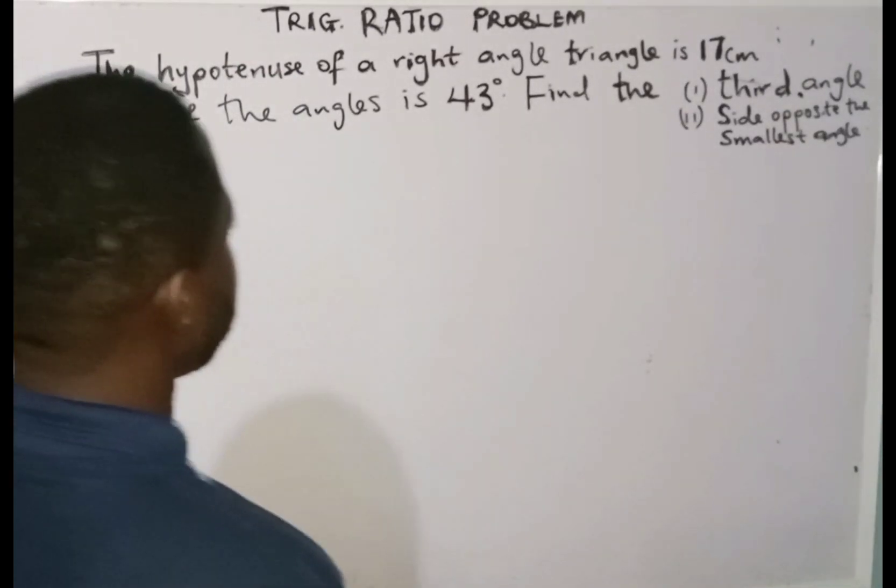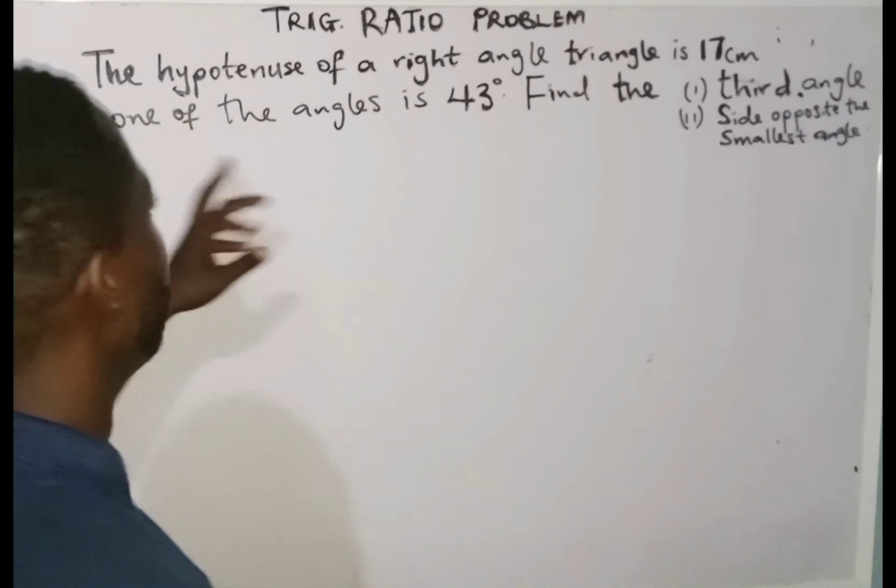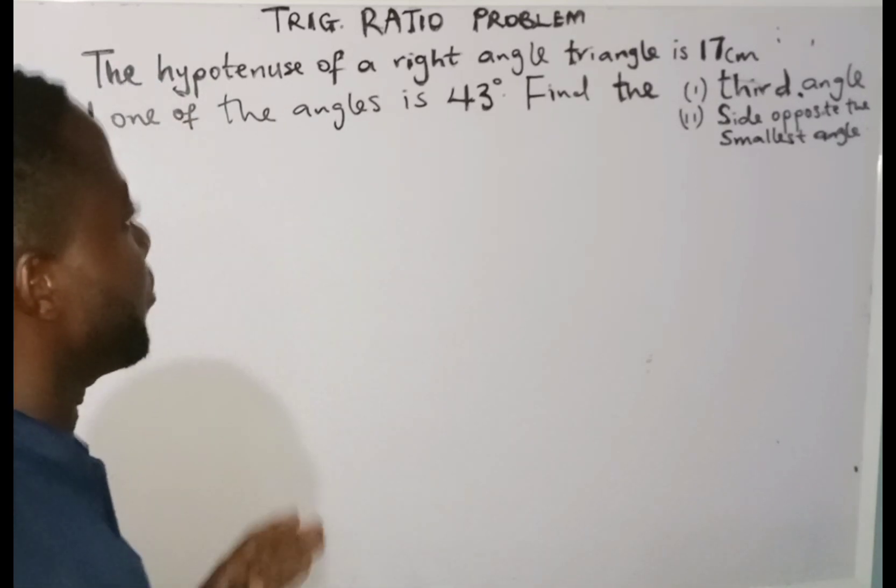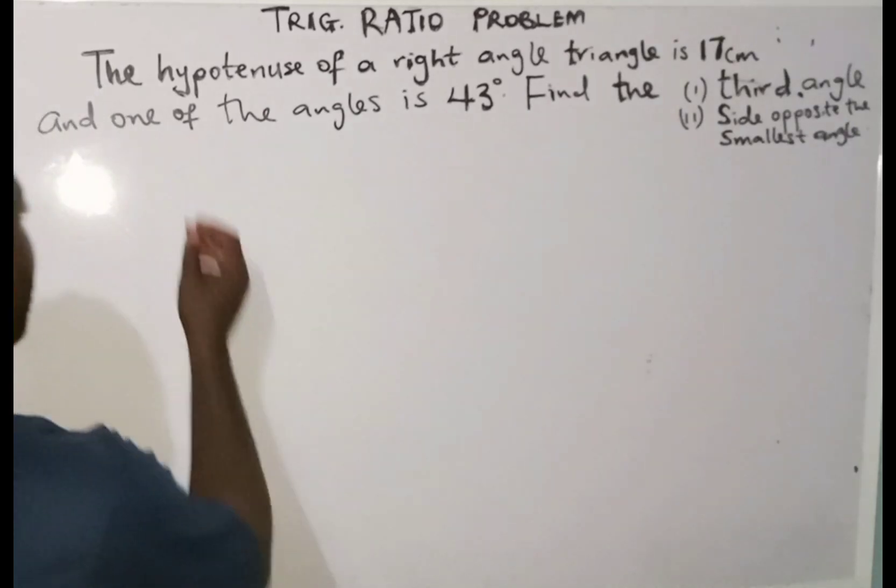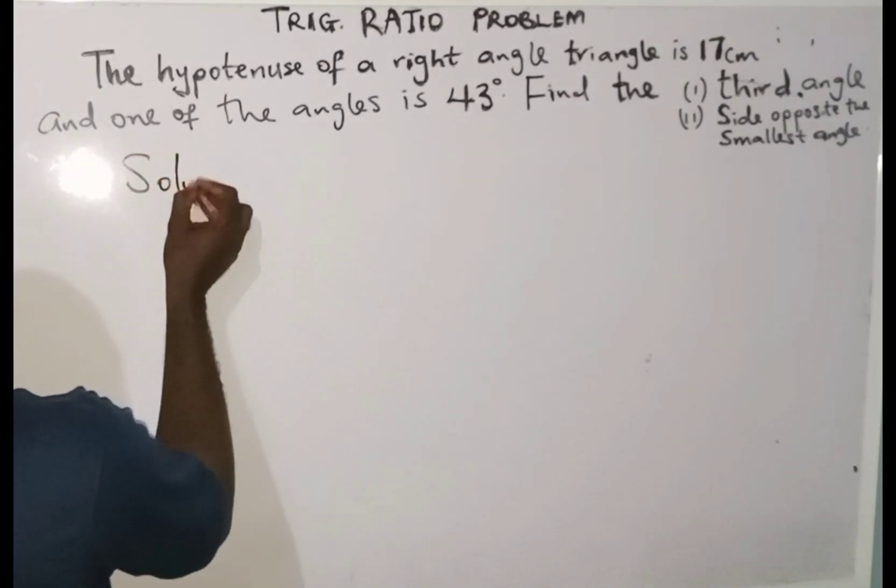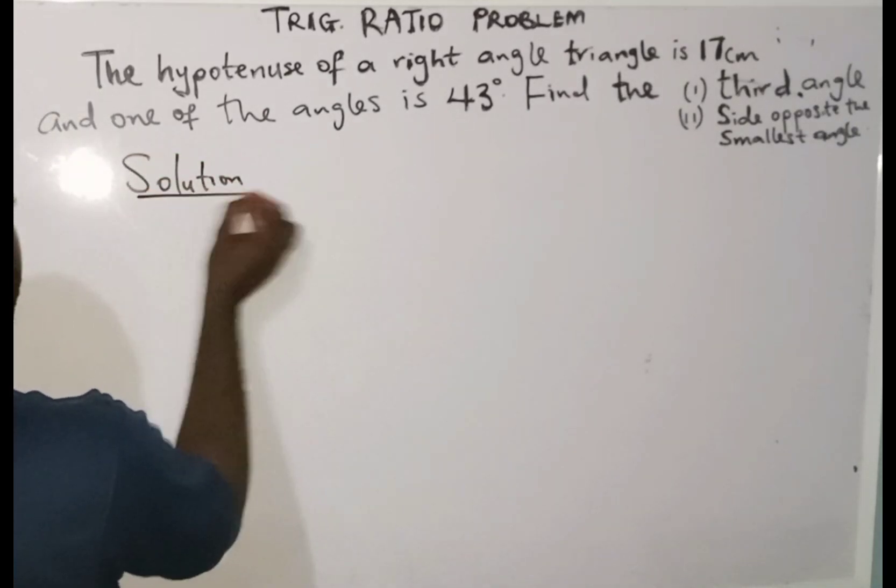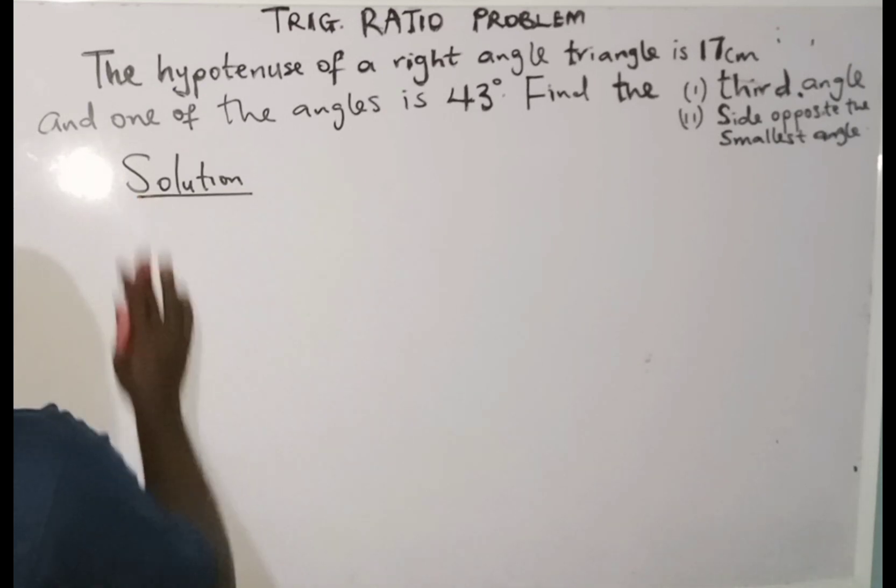The question is: the hypotenuse of a right-angle triangle is 17 cm and one of the angles is 43 degrees. The first thing I'm going to draw is a right-angle triangle.